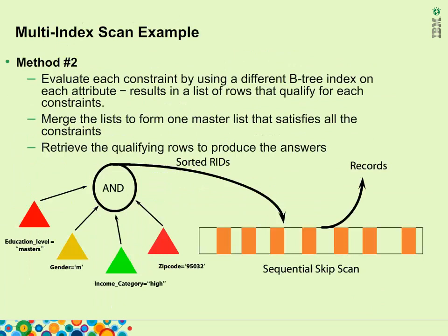With 11.70, we can now take advantage of multi-index scan. One can set up a different index for each column. The system then uses each index to retrieve a list of rows that qualify and represents them in a bitmap. Then, using the AND operator to merge the bitmaps, it produces a qualifying set of bits representing the rowids for the qualifying rows. We further optimize retrieval by sorting the rowid list before retrieving the rows in a sequential manner. It is also very easy to provide COUNT, often found in queries, by just counting the bits.